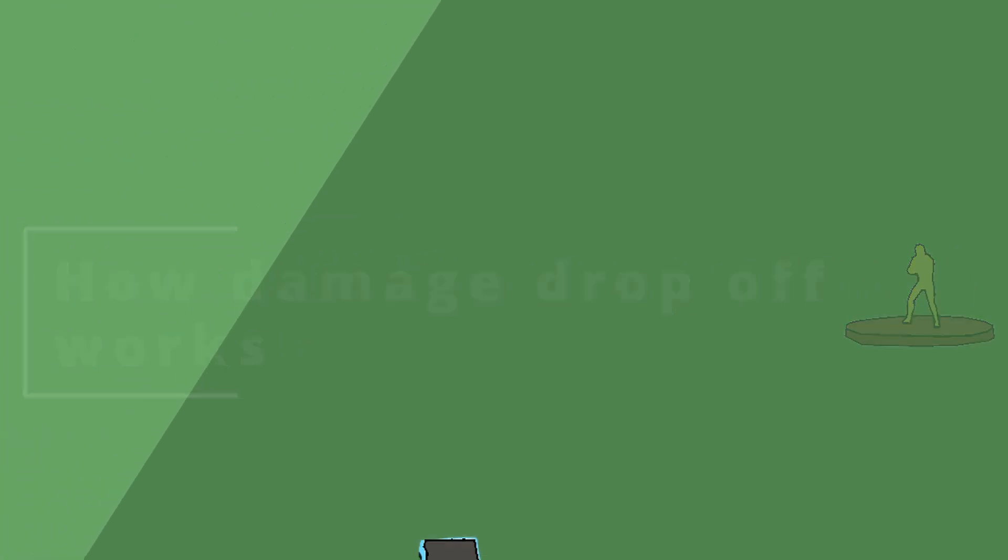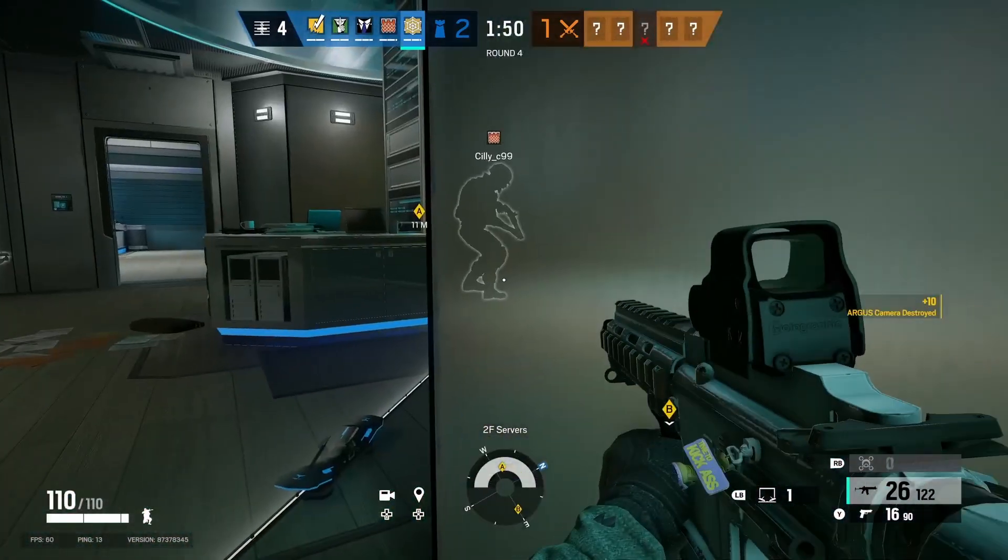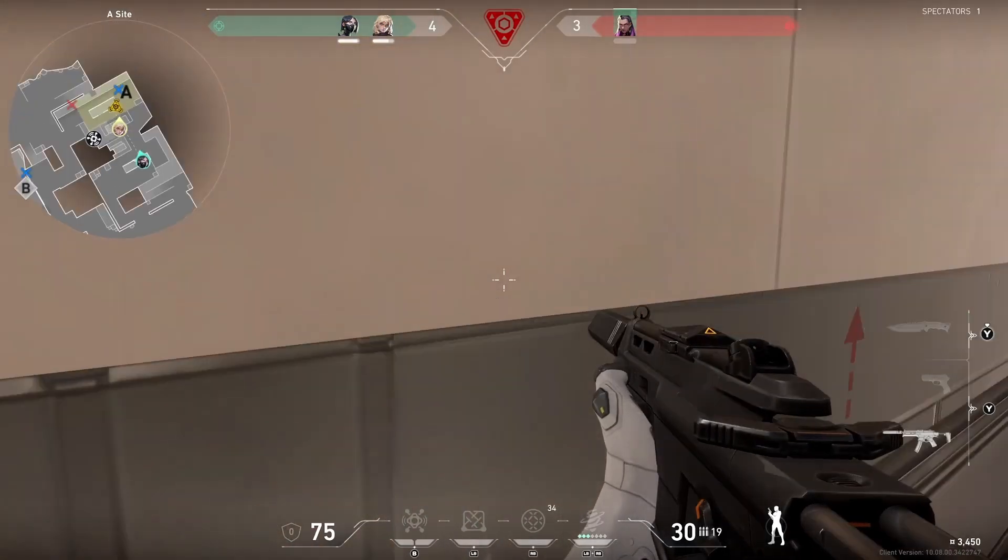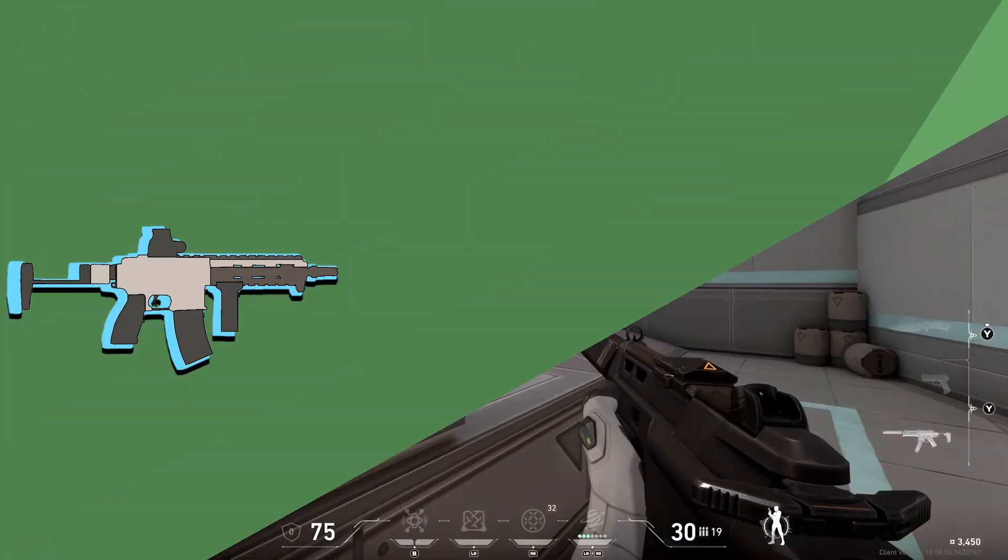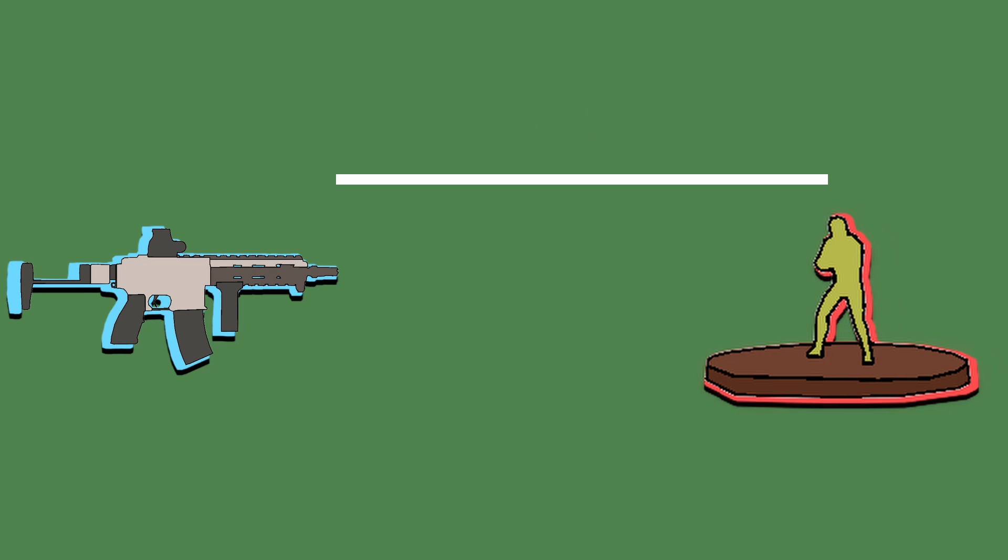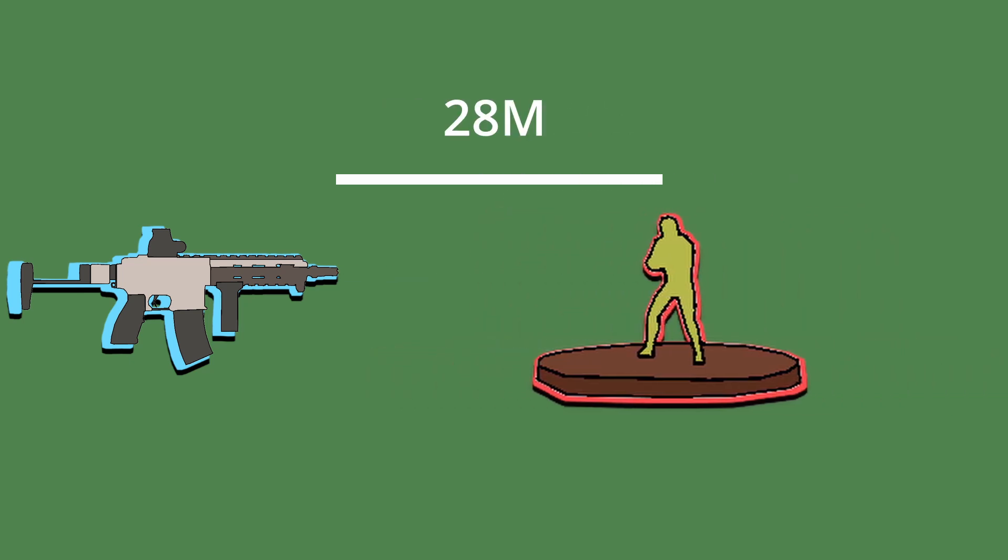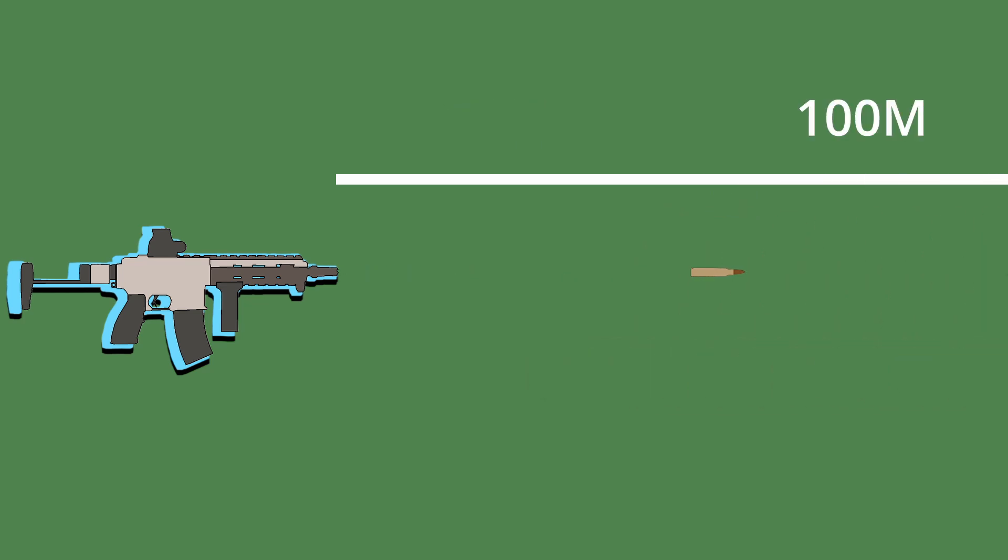Most of the popular shooters implement damage drop-off. Damage drop-off is a mechanic in video games. It allows developers to fine-tune the weapon without changing it too much. When a shot is hit, the game calculates the distance the bullet travelled, and does damage accordingly. Usually, your weapon does the max damage up close. And the further away you go from your enemy, the lower the damage will be, until a damage cap is reached.